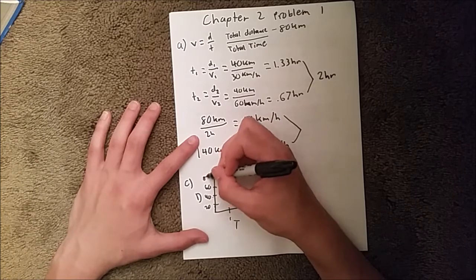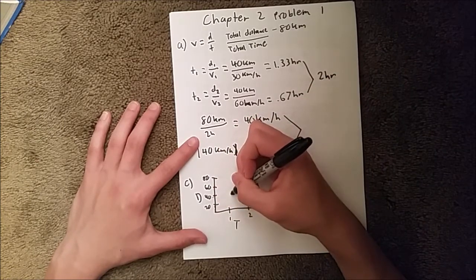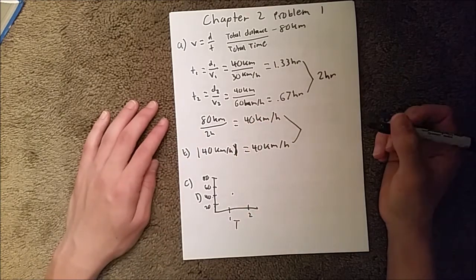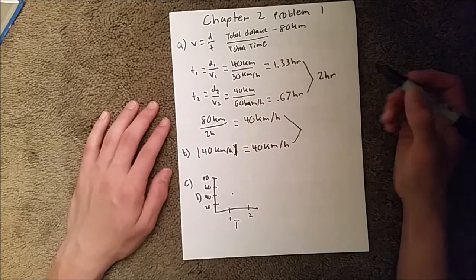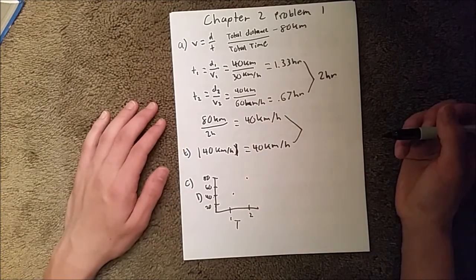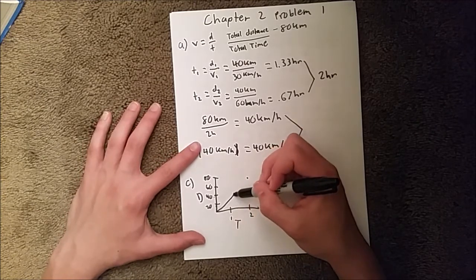So, in the first 40, we know it goes 40 for 1.33 hours, so we'll do that right there. And then we know at 2 hours it's at 80, so we'll do right there. And so, we will draw a line to those two.